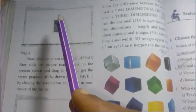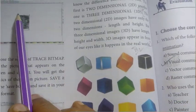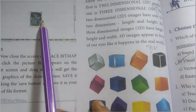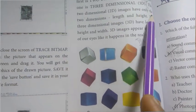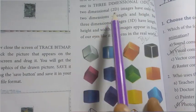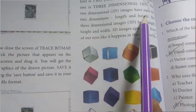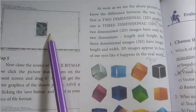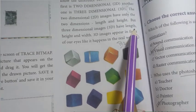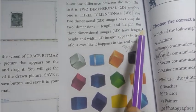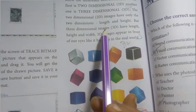We have 3D images that look like real images. In this case, length and height are for 2D. The two-dimensional images have only two dimensions — that is length and height. And for 3D, if you look at three-dimensional images, they have length, height and width.